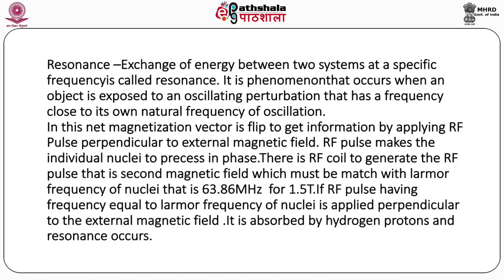The next topic is the interaction of nuclei with a strong static magnetic field, called resonance and excitation. Resonance is a very important part of MRI. It tells you about the exchange of energy between two systems at a specific frequency called resonance frequency. It is a phenomenon that occurs when an object is exposed to an oscillating perturbation that has a frequency close to its own natural frequency of oscillation. The net magnetization vector is flipped to get information by applying a radio frequency pulse perpendicular to the external magnetic field.